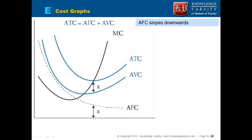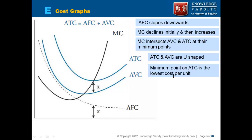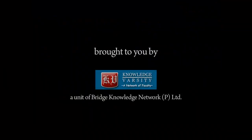To summarize: AFC slopes downward always. Marginal cost initially declines and then increases, intersecting AVC and ATC at their minimum points. ATC and AVC are U-shaped. The minimum point on ATC is the lowest cost per unit — the firm should target this point, as the idea is not just to increase quantity, but to produce at the lowest cost possible.